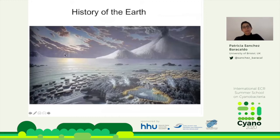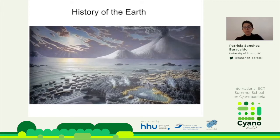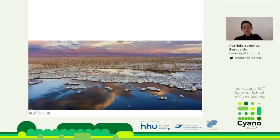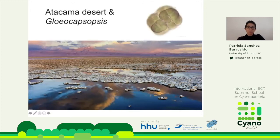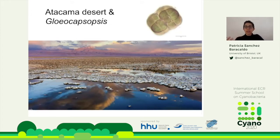Here is an artist's representation of what the early Earth would have looked like — very different from today, with stromatolites — but the key point is that the composition and chemistry of the oceans and atmosphere was very, very different. I also have a photograph of the Atacama Desert, an extreme environment that reminds me of what the early Earth would have looked like. We recently sequenced a genome of Gloeocapsopsis from there. Basically, the early Earth was an extreme environment and cyanobacteria are really good extremophiles.